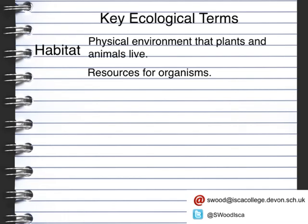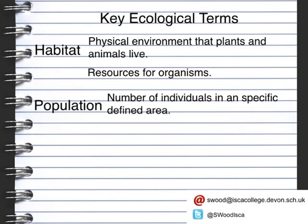The distribution of organisms within that habitat can vary depending on the physical things in the environment and the resources available. For example, in a pond, you might find that there's not an equal distribution of invertebrates — they may just be based in a certain area where there are lots of plants for them to feed on. The next key term is a population, which is purely the number of individuals in a specific defined area. It could be the number of blades of grass in a field, the daisies in a field, or the number of woodlice under a rock.